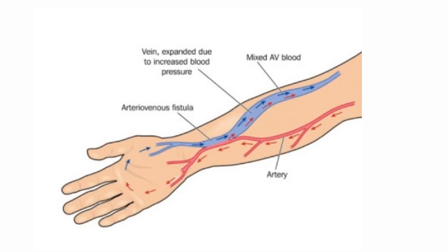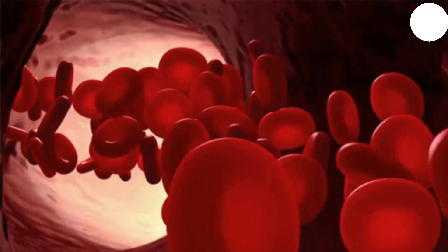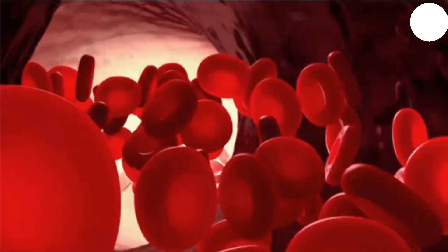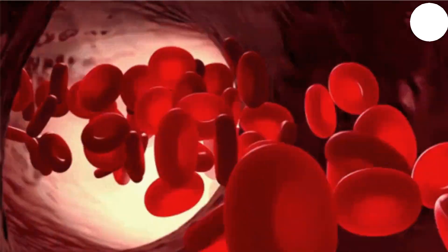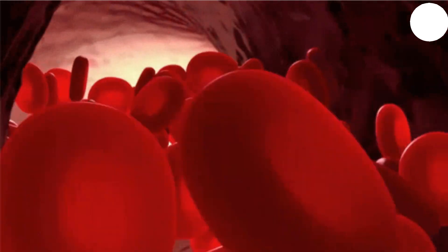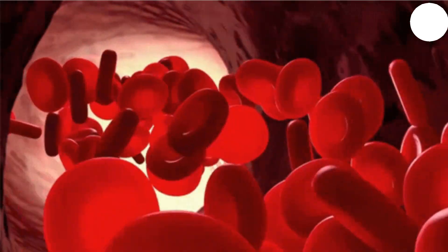Once it's placed, there's a waiting period for the access to mature. An arteriovenous fistula, or AV fistula, is a surgical connection between an artery and a vein. It allows for a fast flow of blood from the artery, enabling the placement of two needles in the access and a blood flow rate of greater than 400 milliliters per minute.